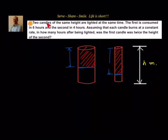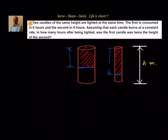Total height of both candles is the same. The first is consumed in 6 hours, the second in 4 hours. We have to find the time t at which the first candle height is twice the second candle height. In t hours, the first candle burns some height, and the second candle burns some height. If we can find those two heights, we know the total height and can apply the condition.